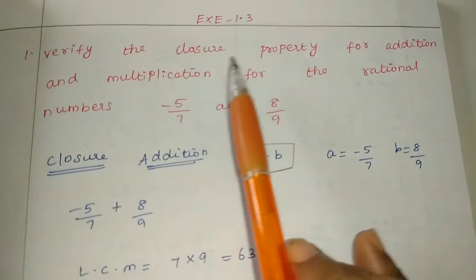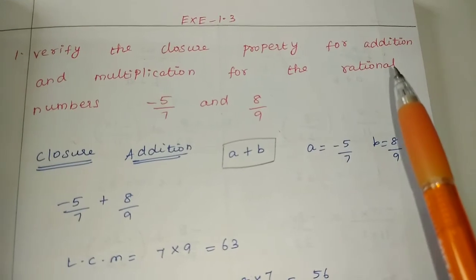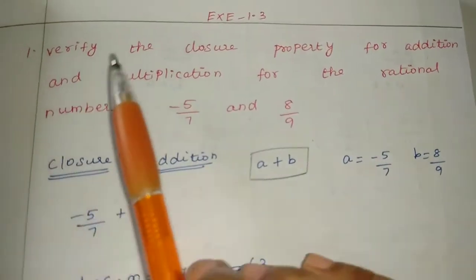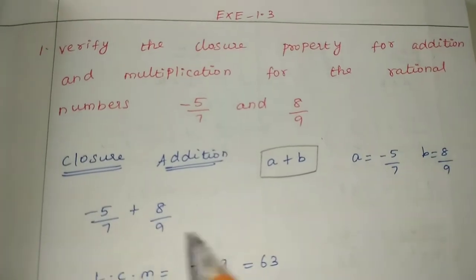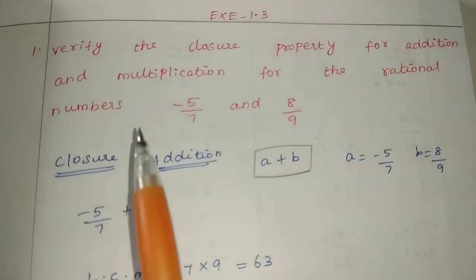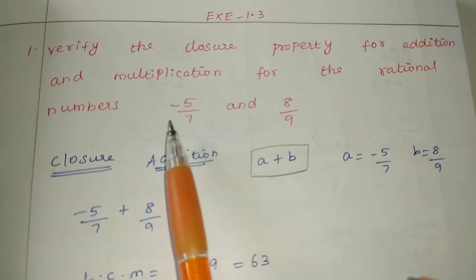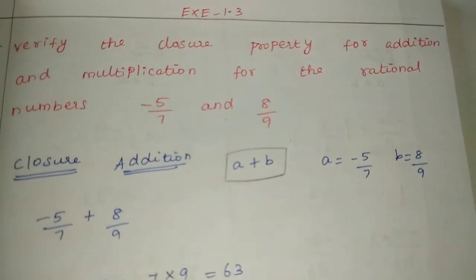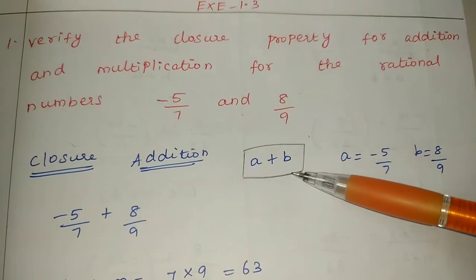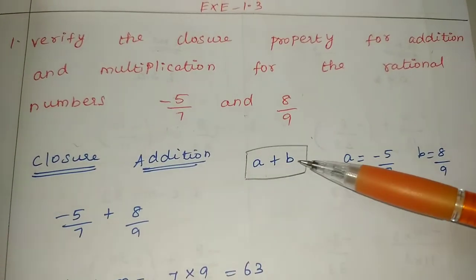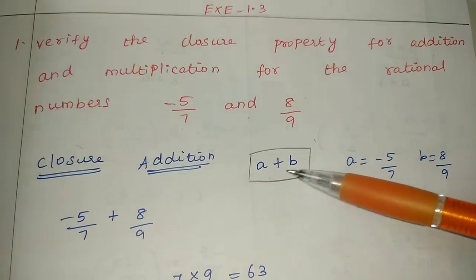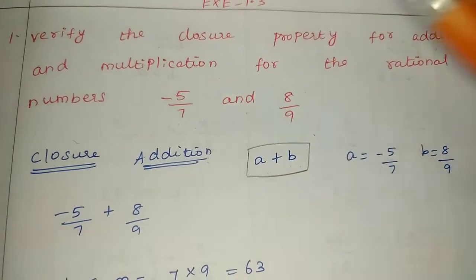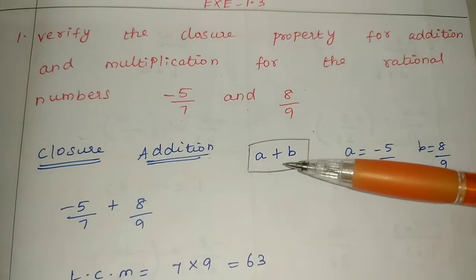In our video, we will cover closure property, commutative property, associative property, and distributive property. To apply the formula, we will be given two values: A is equal to minus 5 by 7, B is equal to 8 by 9. Now we will talk about the closure property — first addition, then multiplication.